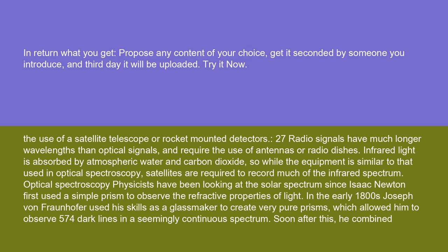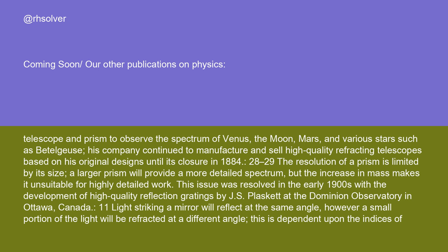Optical spectroscopy physicists have been looking at the solar spectrum since Isaac Newton first used a simple prism to observe the refractive properties of light. In the early 1800s, Joseph von Fraunhofer used his skills as a glassmaker to create very pure prisms, which allowed him to observe 574 dark lines in a seemingly continuous spectrum. He then combined telescope and prism to observe the spectrum of Venus, the Moon, Mars, and various stars such as Betelgeuse. His company continued to manufacture and sell high-quality refracting telescopes based on his original designs until its closure in 1884.